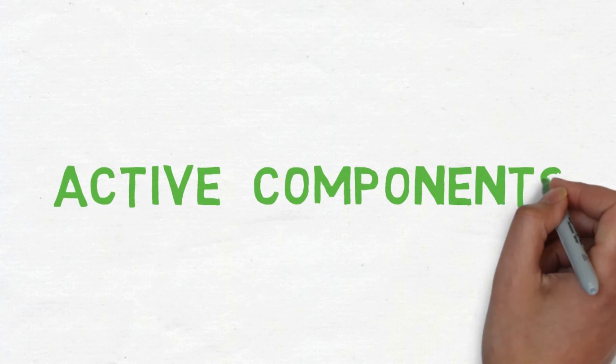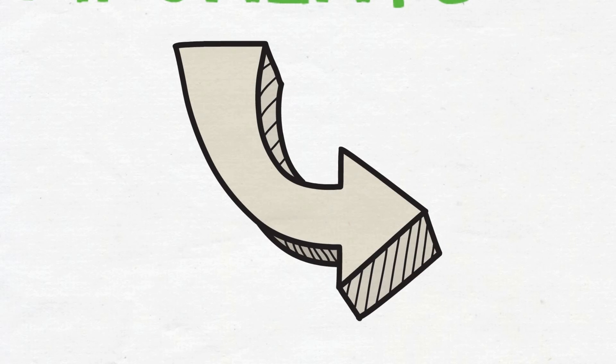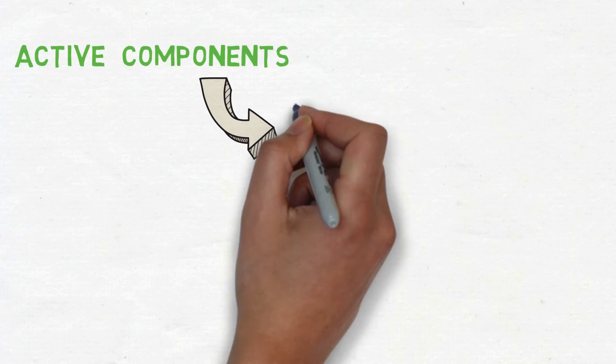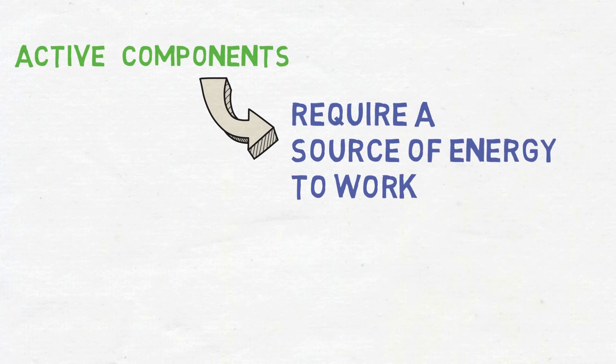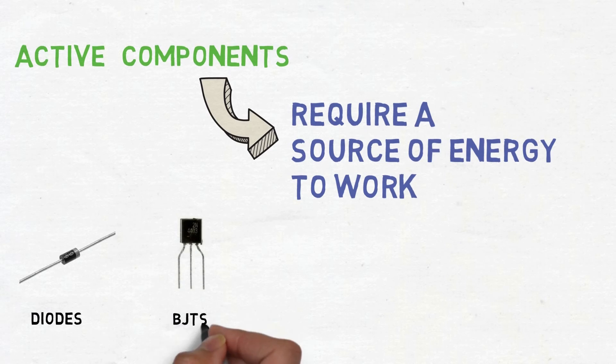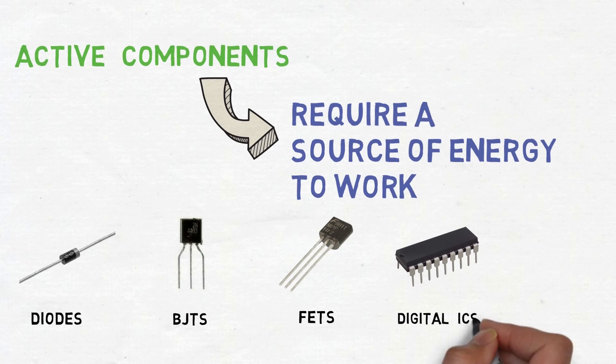Active components are electronic components that require a source of energy to perform their functions. Some active components are diodes, BJTs, FETs, digital ICs, and display units.